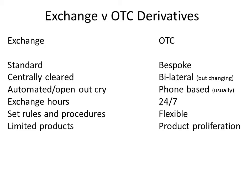Exchanges tend to have a limited number of derivatives listed, described simply as futures and options. In the over-the-counter market, there are certainly more products available for trading — for instance, derivatives which go by the name of forwards, swaps, warrants, exotics, and over-the-counter options as well.